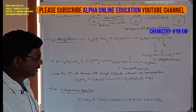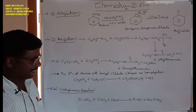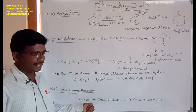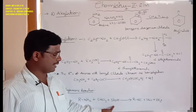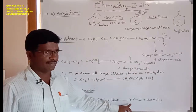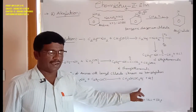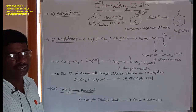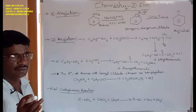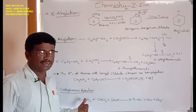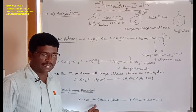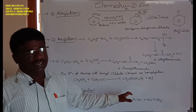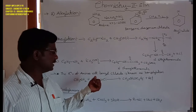The fourth reaction is the carbylamine reaction, also known as the phenyl isocyanate test. Aliphatic or aromatic primary amines (R-NH2) treated with chloroform (CHCl3) and alcoholic potassium hydroxide (KOH) form alkyl isocyanate, with removal of potassium chloride and water. This reaction is known as the carbylamine reaction — very important. Both aliphatic and aromatic primary amines react with chloroform and alcoholic KOH to form alkyl isocyanate.